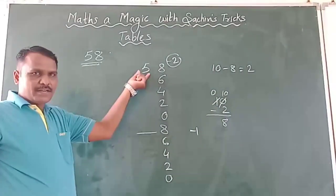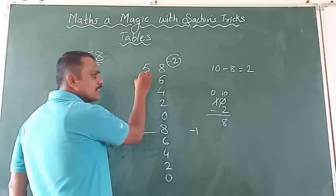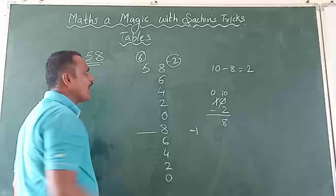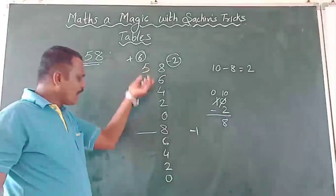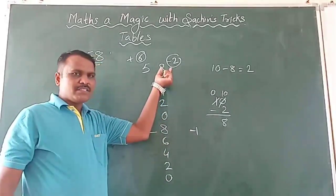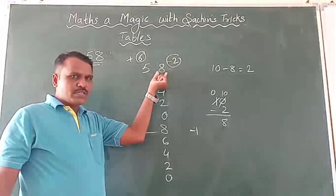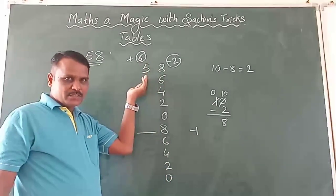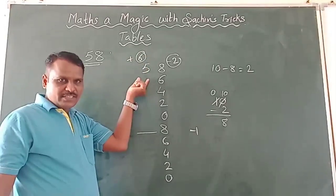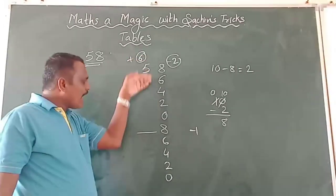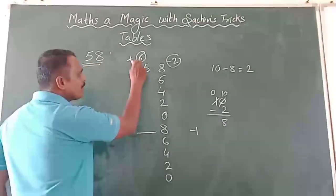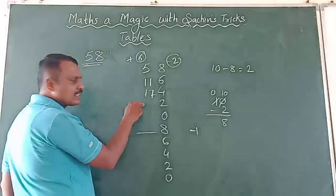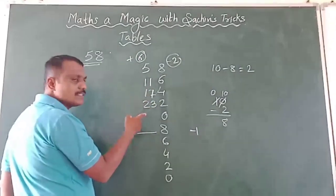Now for the 5 — the tens digit of 58. What is the successor of 5? The successor of 5 is 6. So at the tens place you add 6 each time. At the unit place we subtracted — because 8 was closer to 10, so 10 minus 8 is 2. At the tens place, add the successor of the tens digit. So 5 plus 6 is 11, 11 plus 6 is 17, 17 plus 6 is 23, 23 plus 6 is 29.